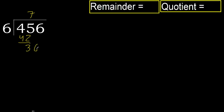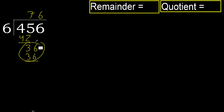Next, bring down 6, giving 36. 6 multiply by 6 equals 36. 36 is not greater, so subtract: 36 minus 36 equals 0.